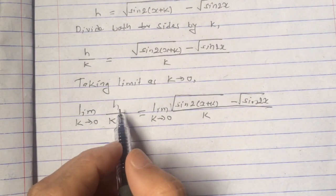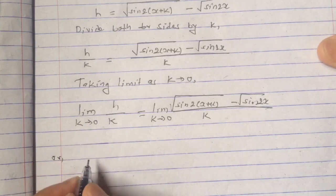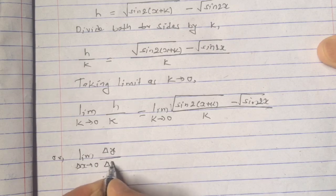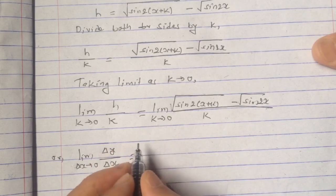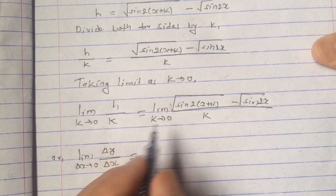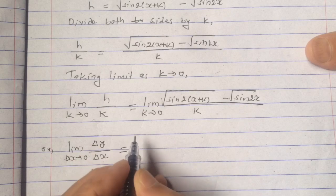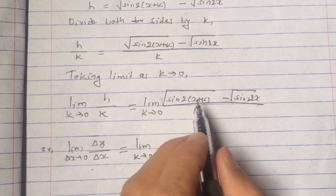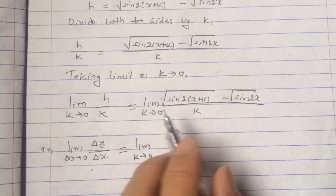After taking the limit, on the left-hand side, since h means Δy and k means Δx, we replace them with their original values. So: lim(Δx→0) Δy/Δx = dy/dx, which is the derivative of y with respect to x. However, if we directly put k = 0 in the numerator and denominator on the right-hand side, we get 0/0, which is an indeterminate form. So we cannot proceed directly — we have to simplify this expression first.